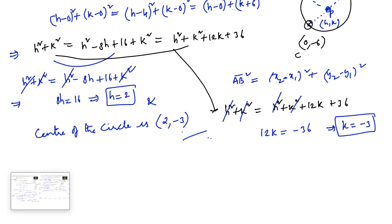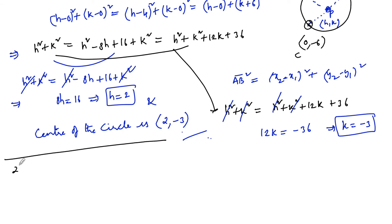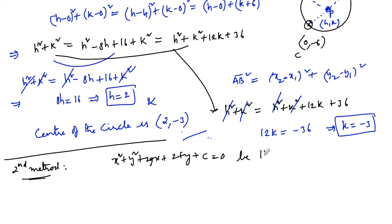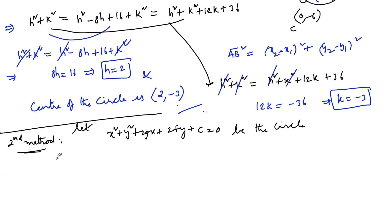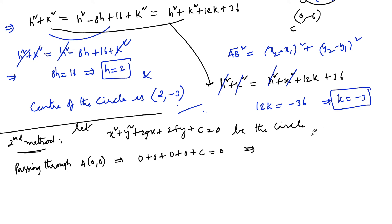We can also solve this by another method — using the general equation of a circle: x² + y² + 2Gx + 2Fy + C = 0. Substituting point A(0,0): 0 + 0 + 0 + 0 + C = 0, so C = 0.